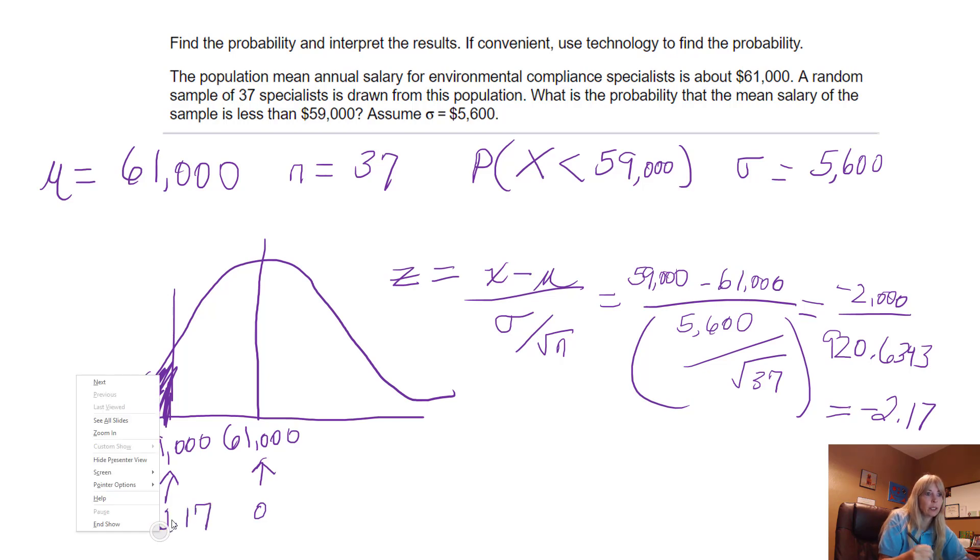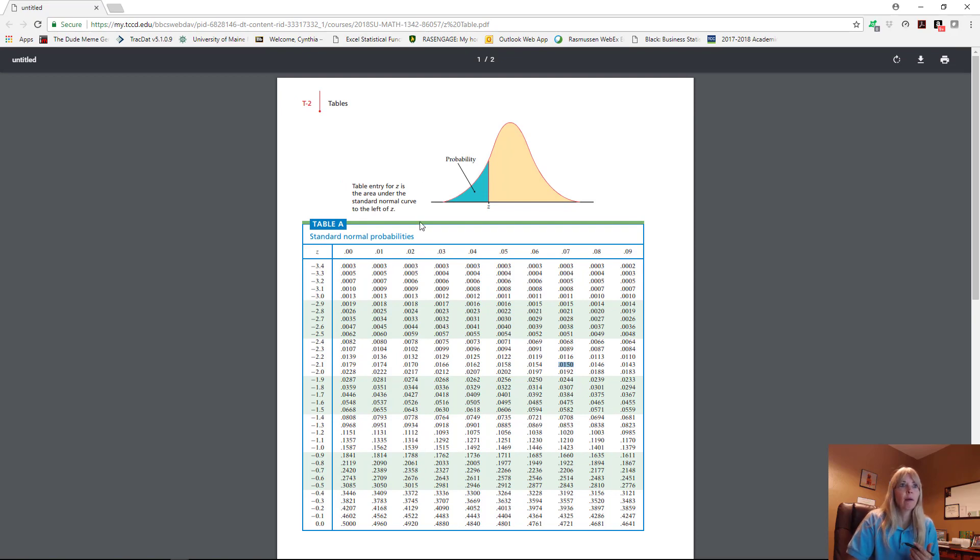So negative 2.17. That's a horrible looking 2, isn't it? All right. So basically, what I'm saying is, what would that probability be? So how do I do that? You know how you do that, right?